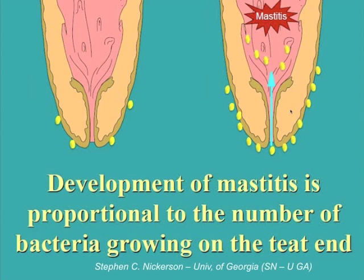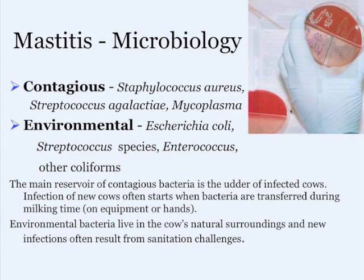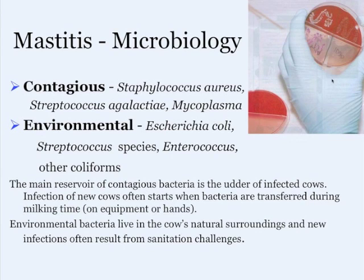All our control efforts come down to what happens at that teat end. Bacteria break down into two types: contagious types like Staph aureus and Strep ag that live in the udder of infected cows and transfer at milking time, or environmental types — E. coli, fecal streps, strep species, staph species — that are dependent on how clean we keep the cows and their environment. We can do a bulk tank culture to determine which type we have.